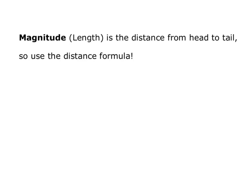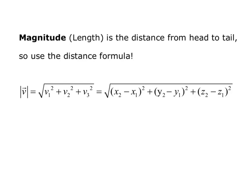The magnitude, or length, is the distance from head to tail of the vector, so we use the distance formula. The magnitude of vector V equals the square root of V1 squared plus V2 squared plus V3 squared, or, using the previous definition, the square root of (x2 minus x1) squared plus (y2 minus y1) squared plus (z2 minus z1) squared.